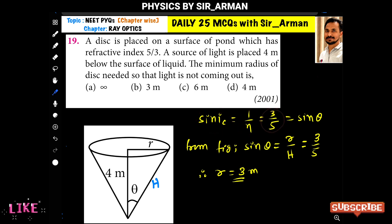And so, here, if we use the trigonometric function, then we know that sine theta is equals to opposite by hypotenuse. So, opposite is r and hypotenuse is h. And also, here, what we have obtained here, sine ic is equals to 3 by 5.